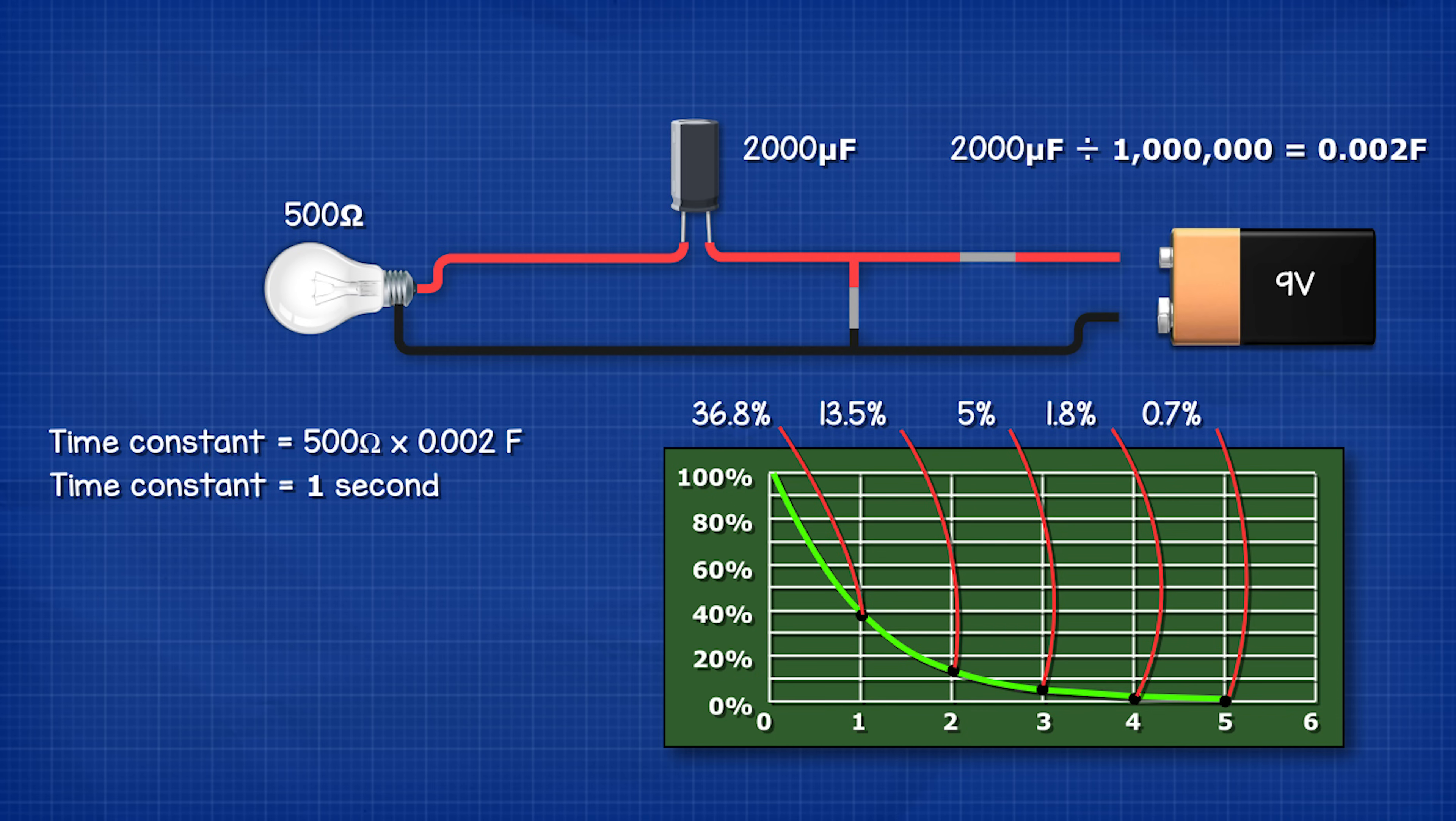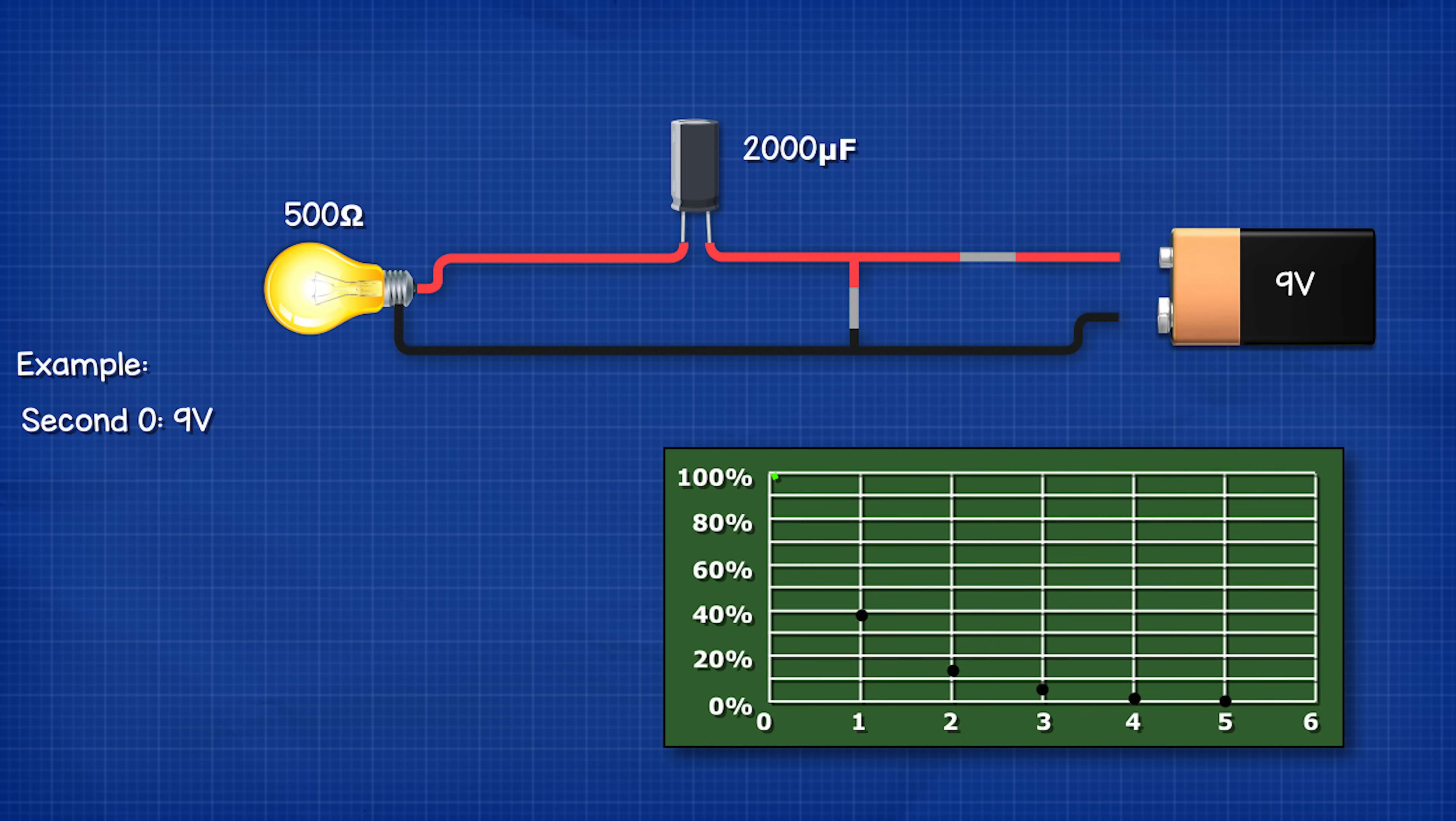So at the very moment the capacitor will be at 9 volts and as it's powering the circuit the lamp will also experience 9 volts. After one time constant, in this case one second, the voltage will be 36.8 percent which is 3.312 volts. At two seconds it's 1.215 volts,